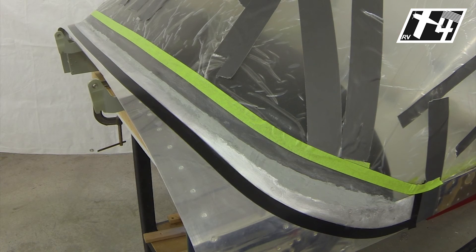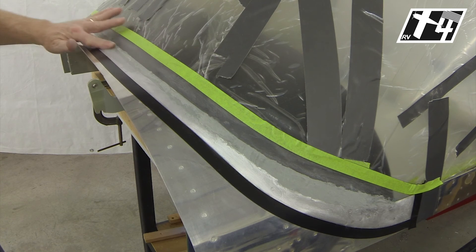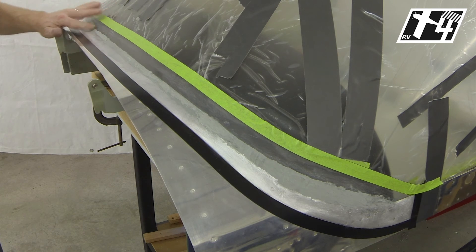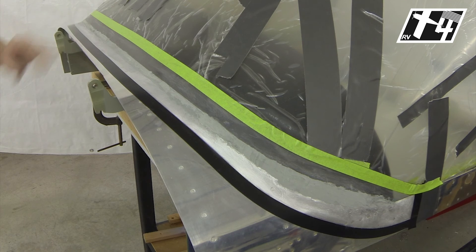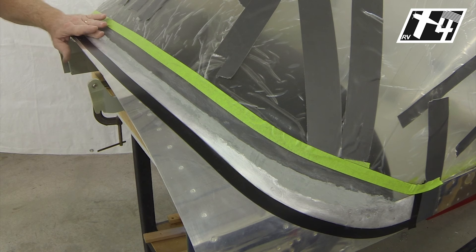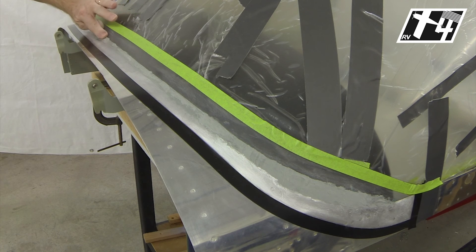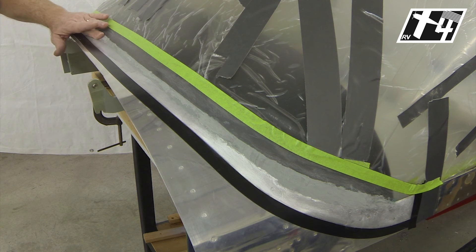Here we are the next day after allowing some time for our micro balloon resin mixture to cure up. As you notice, it already looks somewhat finished to simplify the sanding process while it was curing and had hardened up just enough to be able to do some scraping work on it.